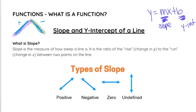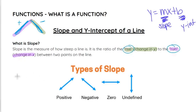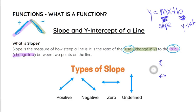Slope is considered the ratio of the rise, which is the change in the y value, to the run, which is the change in x. Rise is going to be your up or your down — it can go down if the number is negative. Run is the left or the right, depending again on whether it's a positive or negative number. It's a ratio written as a fraction with our rise on top and our run on the bottom.